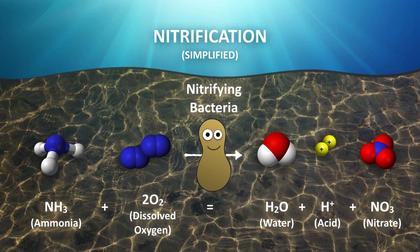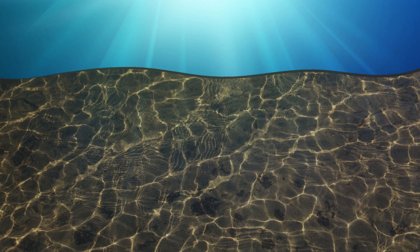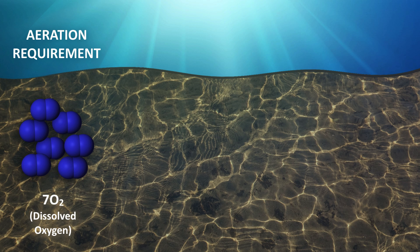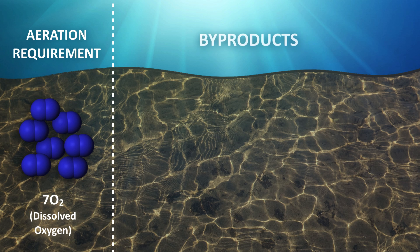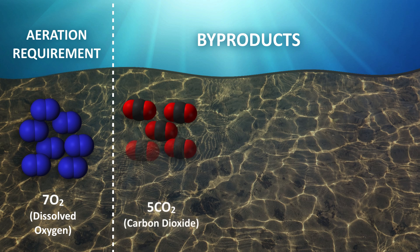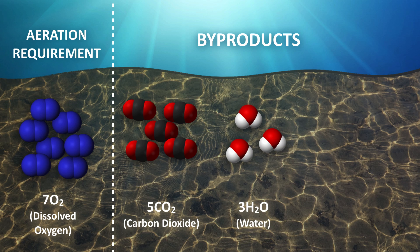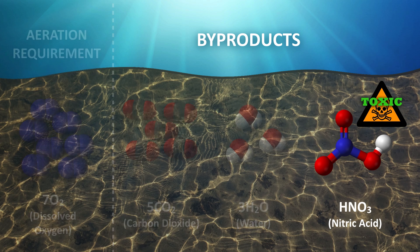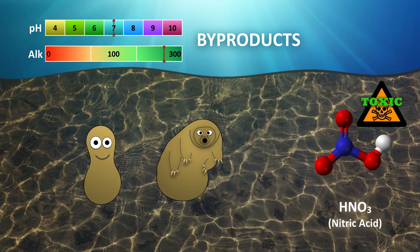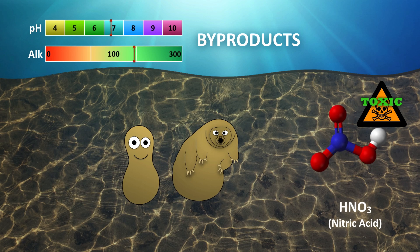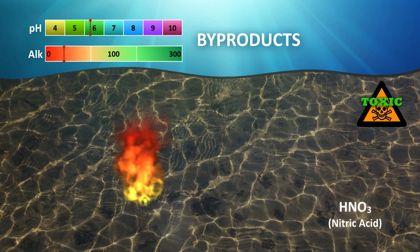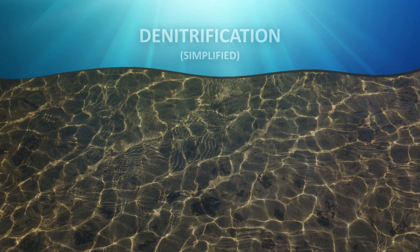Combining the biomass destruction with the nitrification reaction, the biomass requires a total of 7 moles of oxygen for both processes to occur. The byproducts of the combined reactions are 5 moles of carbon dioxide, 3 moles of water, and 1 mole of nitric acid. Consequently, nitric acid is a very strong acid and can kill the biomass because microorganisms are very sensitive to pH conditions. In order to reduce nitric acid in the process, the denitrification process must occur.